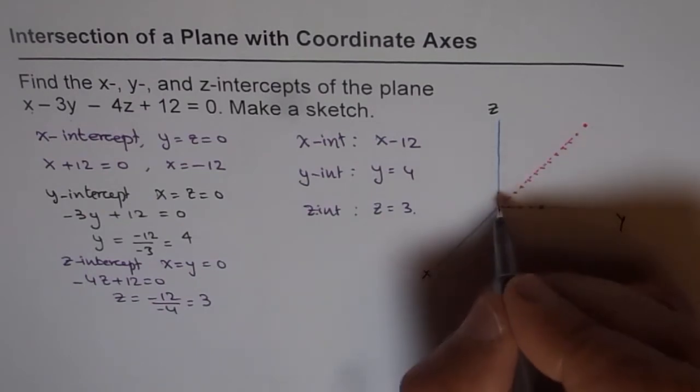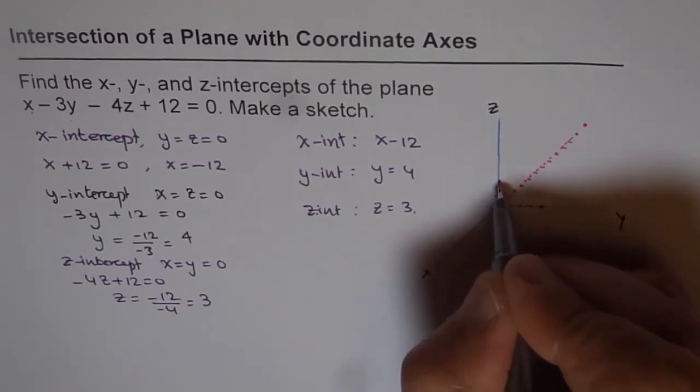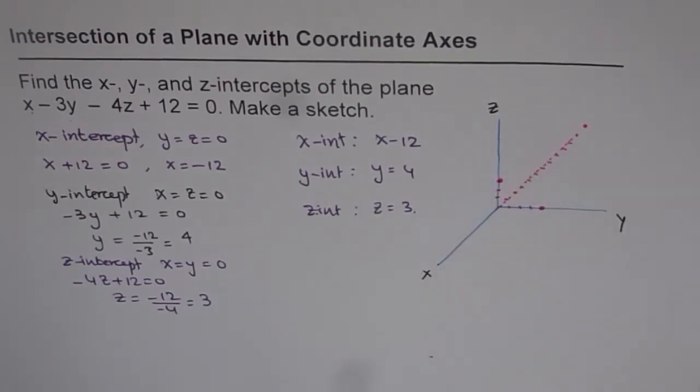And z-intercept is 3. So z is 1, 2, 3. And that is the z-intercept.